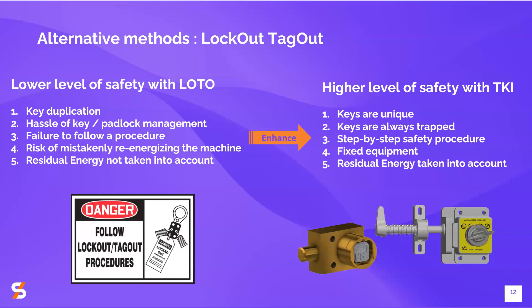The first limitation is that with lockout tagout procedures, keys can easily be duplicated and are not always unique, which induces a big risk because an identical key introduced into an existing procedure can cause shortcuts and risk to that procedure. Trap key interlocks address this by ensuring key codes are always unique and always tracked and managed by the company that issued them, as they are normally the only ones that can reproduce the key code.